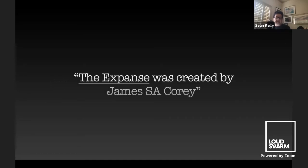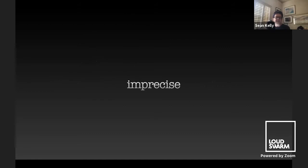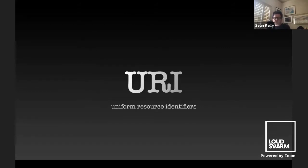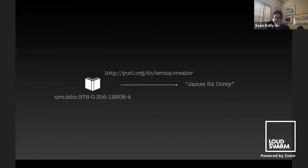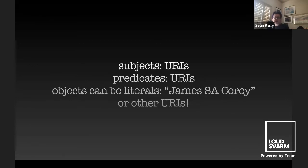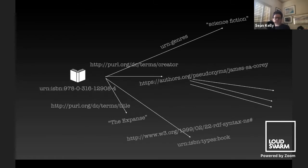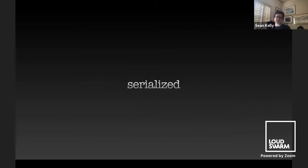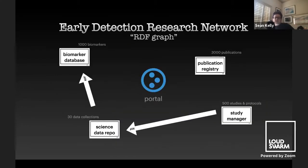RDF lets you make statements about anything. Here's a statement — and here's that same statement charted out. It has a subject, a predicate, and an object. But this is imprecise, so instead we use uniform resource identifiers so computers can understand what we mean by a book or by a creator. These are triples — subject, predicate, and object — as URIs. Objects can be literals or other URIs, which allows us to make an entire network of knowledge — a graph of knowledge. If we serialize part of this in XML, it would look something like this.